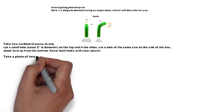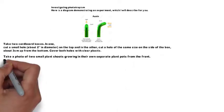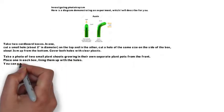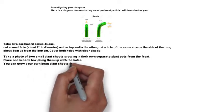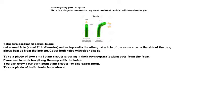Take a photo of two small plant shoots growing in their own separate small pots from the front. Place one in each box, lining them up with the holes. You can grow your own plant lean shoots for this experiment. Take a photo of both plants from above.